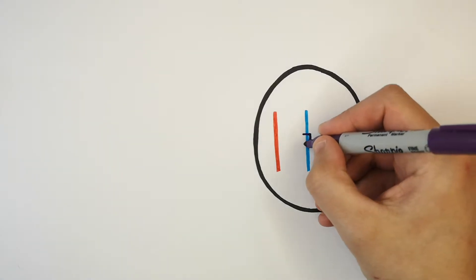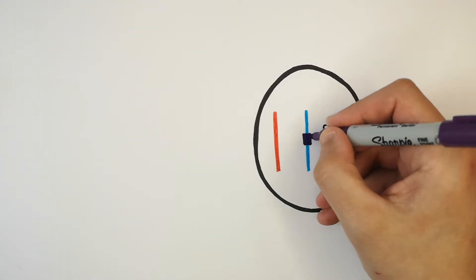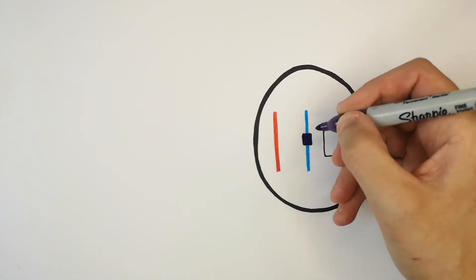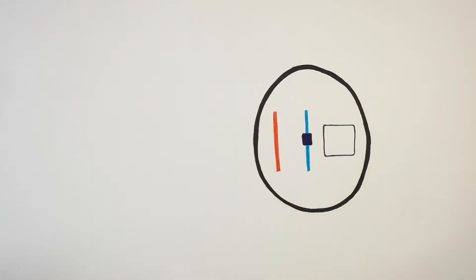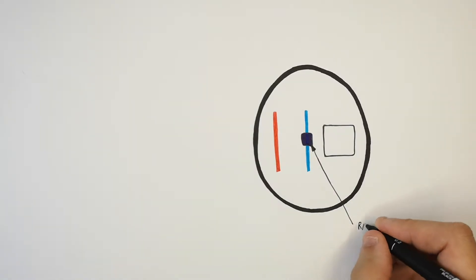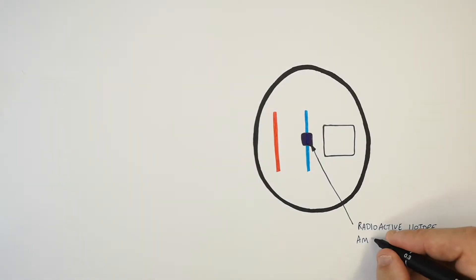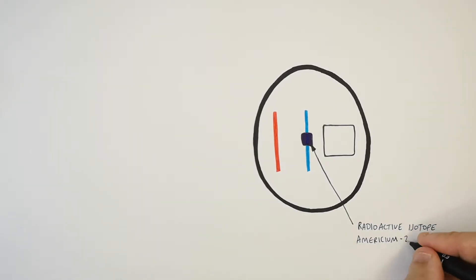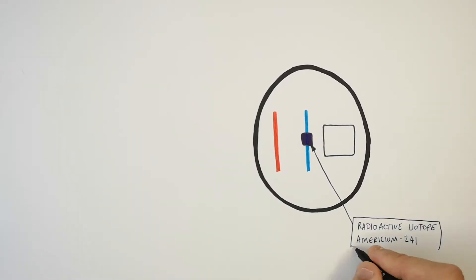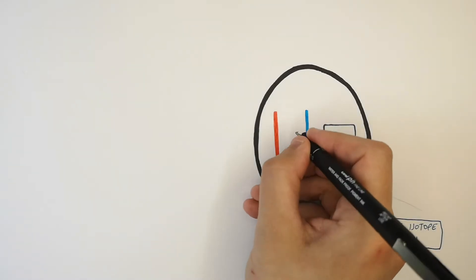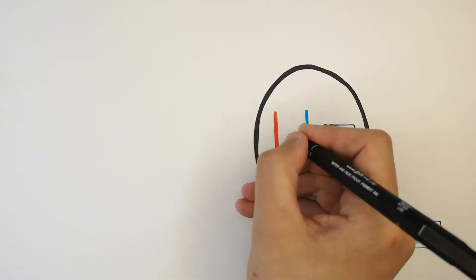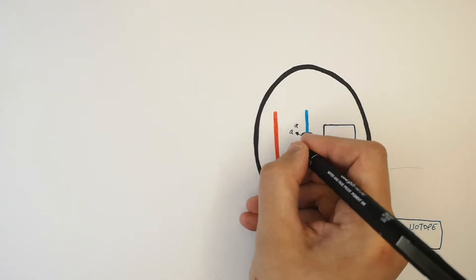This here is a radioactive isotope called americium-241. Americium-241 releases alpha particles.